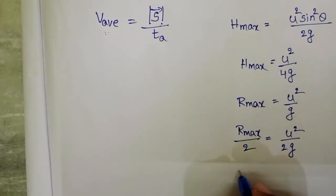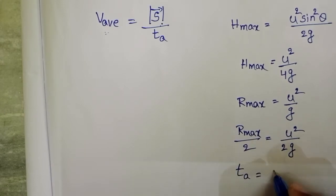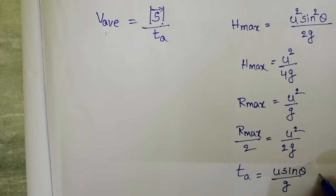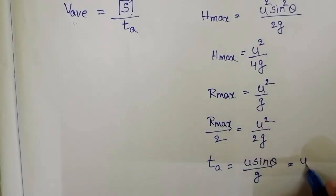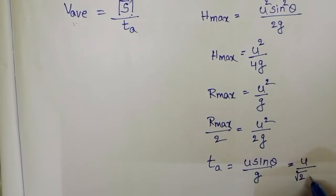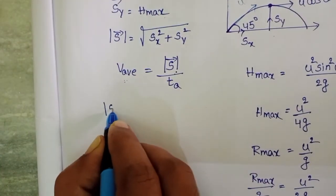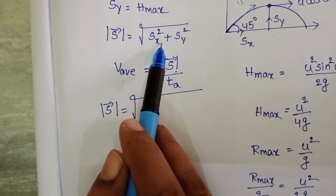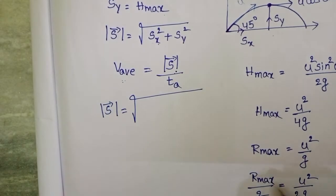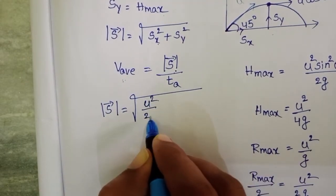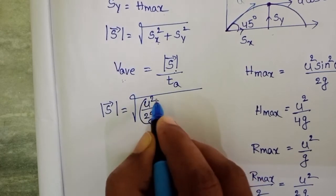The time of ascent equals u sinθ / g, which with sin 45° = 1/√2 gives u/(√2 · g). Now the magnitude of displacement equals the square root of the horizontal displacement squared plus the vertical displacement squared: √[(u²/2g)² + (u²/4g)²].